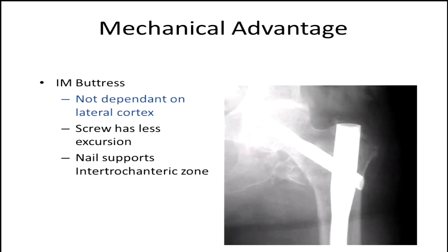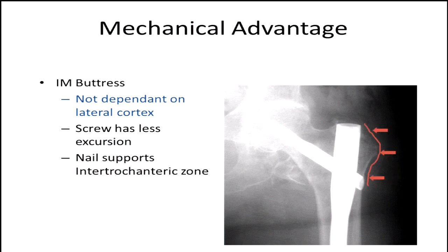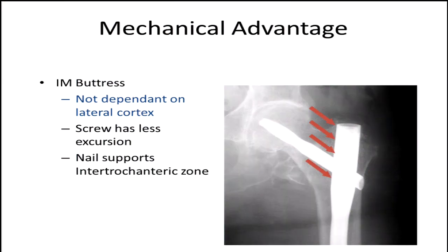There's a mechanical advantage to using a nail: you're not dependent on that lateral cortex, you get this intramedullary buttress. Who cares about what's going on laterally? The screw has less excursion, and the nail actually supports that intertrochanteric region. So, if done correctly and technically, it leads to potentially better results.